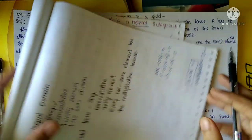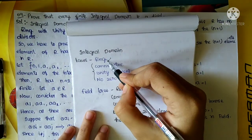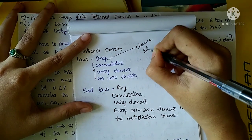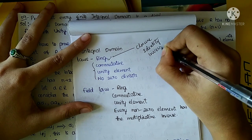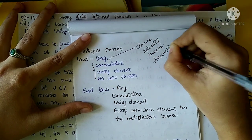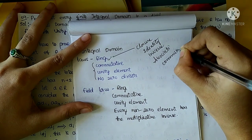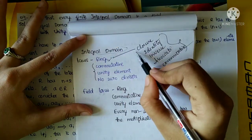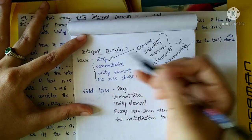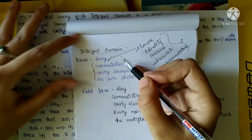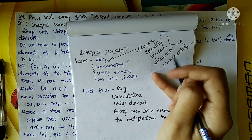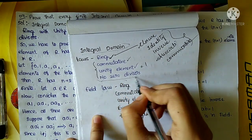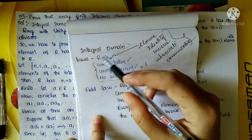So for a ring we satisfy: closure, identity, inverse, associative, and commutative. And no zero divisors. These are the four laws for an integral domain.